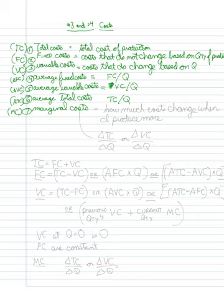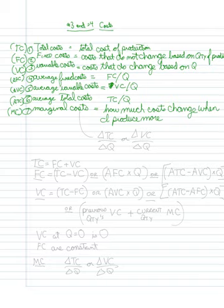Marginal cost is defined as how much costs change when you produce more. Specifically, marginal cost equals the change in total costs divided by the change in quantity (ΔTC/ΔQ), or it equals the change in variable costs divided by the change in quantity (ΔVC/ΔQ). Because those are the only two kinds of costs that change as quantity changes — there is no change in fixed cost as quantities change.